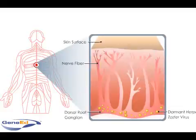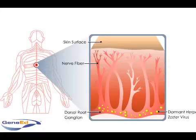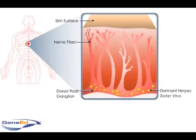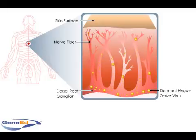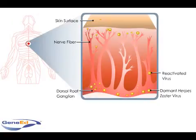The herpes zoster virus causes chickenpox, but also remains dormant in the body's dorsal root ganglion cells once chickenpox has subsided. The herpes zoster virus can reactivate at some later point, causing shingles. Why the herpes zoster virus reactivates in a specific person is rarely understood.